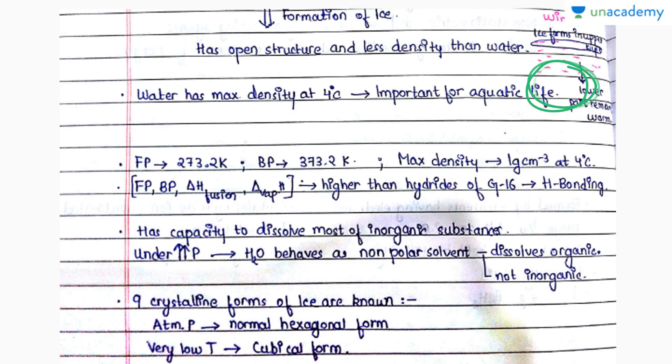We know the freezing point and boiling point. We know the maximum density of 1 gram per centimeter cube at 4 degrees Celsius. It has some properties like the freezing point, boiling point, enthalpy of fusion and vaporization—they are slightly higher than the hydrides of group 16 element, which is the group from which oxygen belongs, because it shows hydrogen bonding.